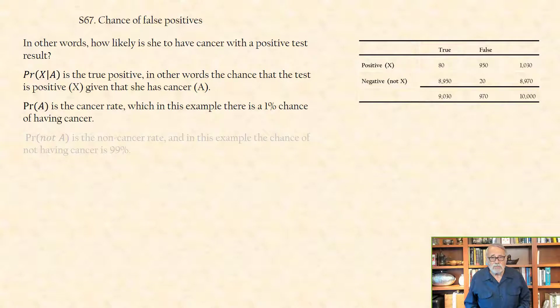Pr(A) is the cancer rate, which is, in this example, there is a 1% chance of having cancer. The probability of not A is the non-cancer rate, and in this example, the chance of not having cancer is 99%.